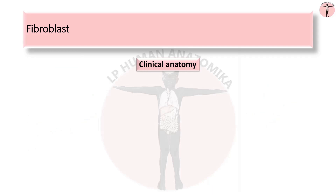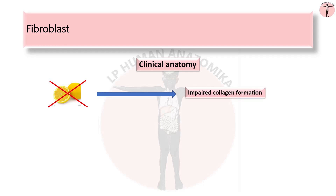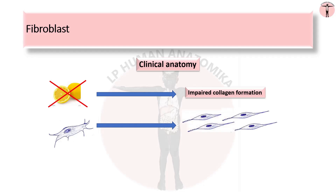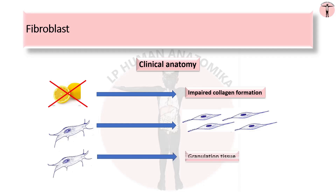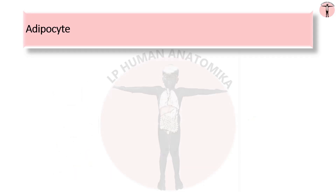Coming to the clinical anatomy of fibroblasts: vitamin C deficiency leads to impaired collagen formation. In healing of wounds, the fibroblasts resume mitotic activity and subsequently convert into fibrocytes. In the process of repair, sometimes fibroblasts form granulation tissue when embedded in a vascular stroma.